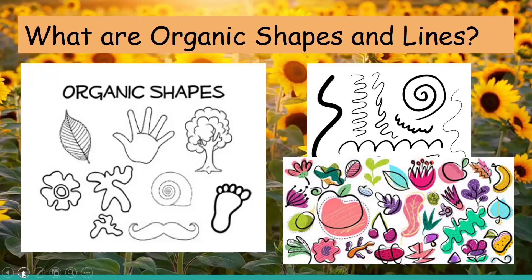But first let's learn about organic shapes. What are organic shapes and lines? We've been learning about all different kinds of lines — wavy lines, bumpy lines, zigzag lines. Organic lines are lines that are free form and just go in all different kinds of directions. A spiral can be an organic line, so can a bumpy line or a wavy line, even a zigzag line. These types of lines when they connect together can make organic shapes.